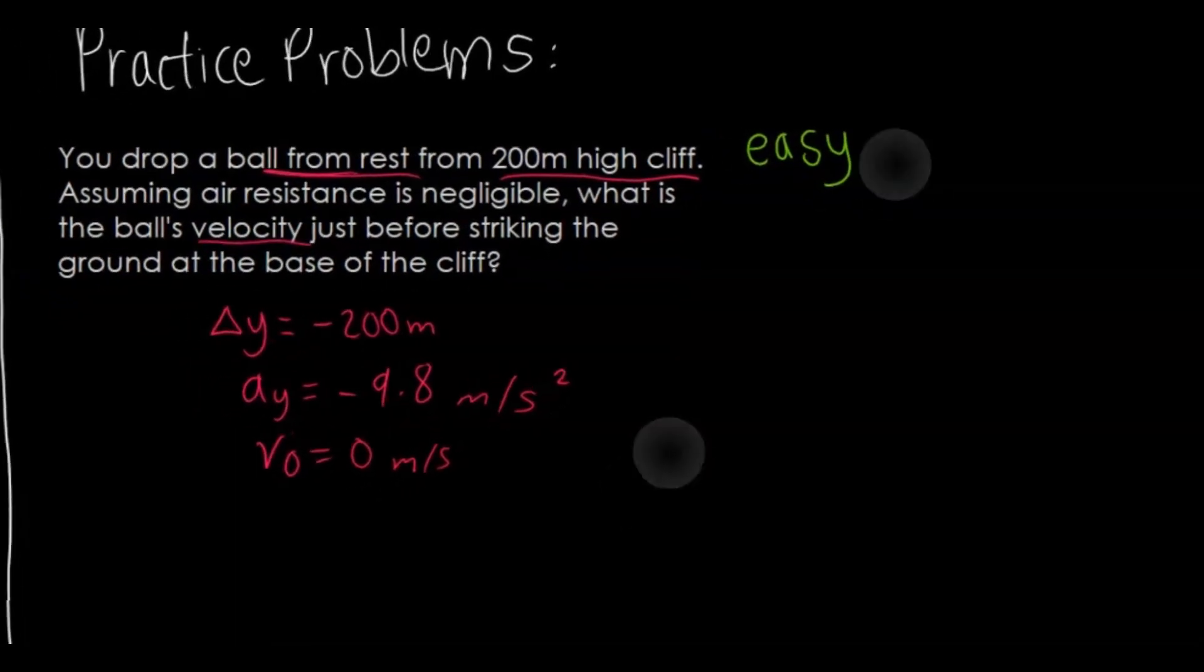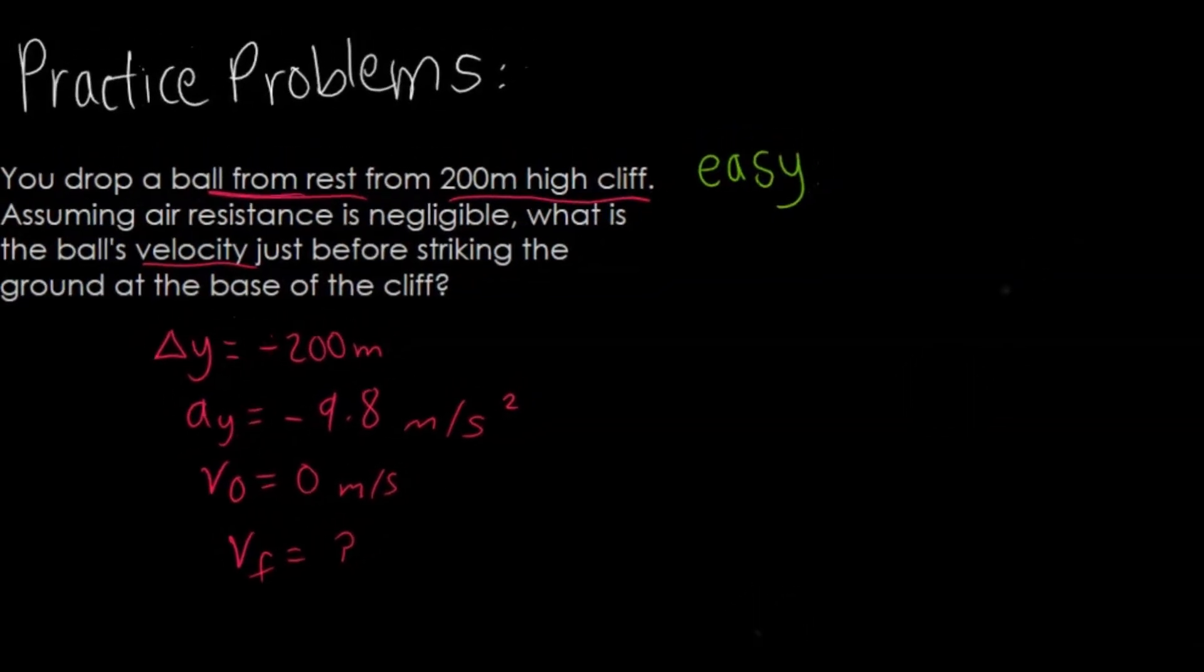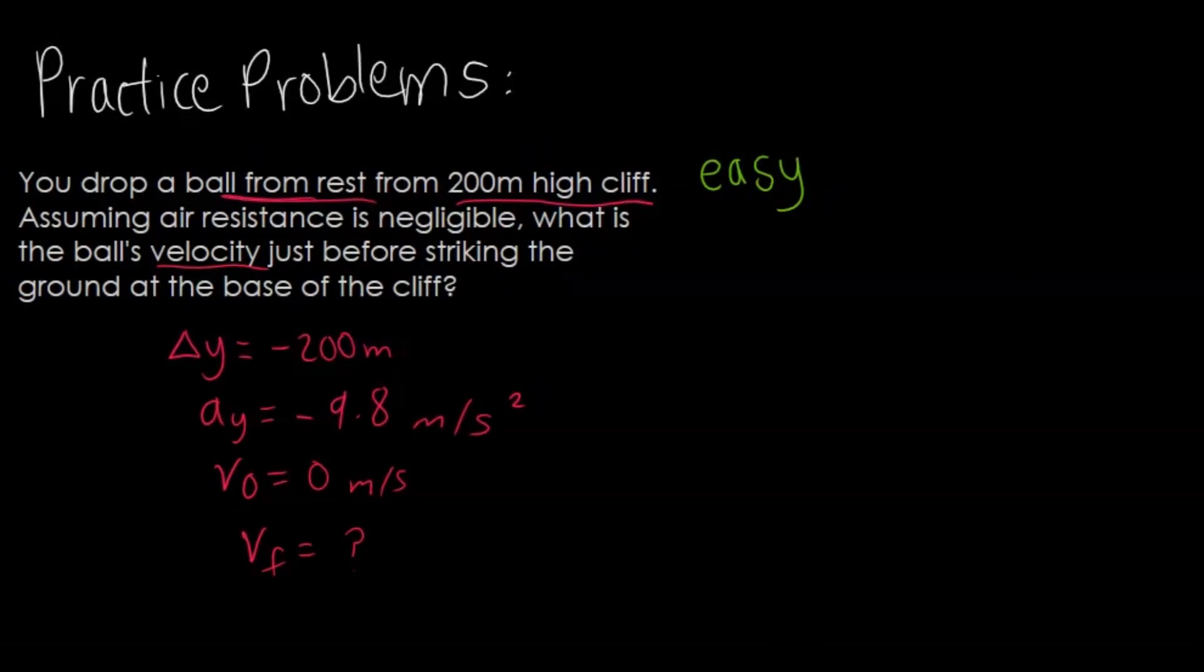We want to find the ball's velocity just before striking the ground, so that is what we're going to be solving for - the final velocity. Now the final velocity is zero right when it hits the ground, but for our case we want to find the velocity just before striking the ground. Let's pick out one of our equations that has these three known variables and can help us find the final variable.